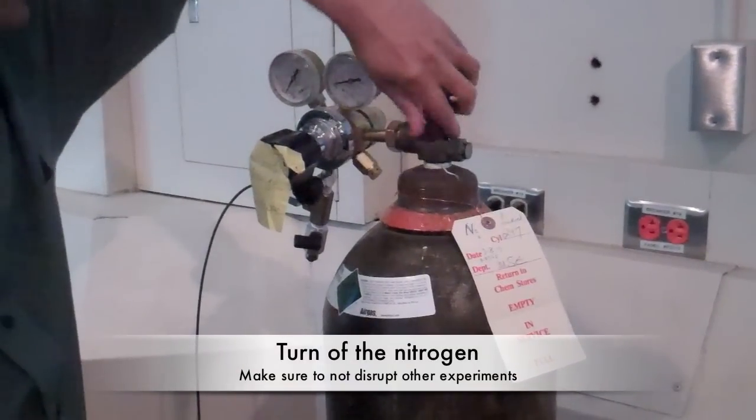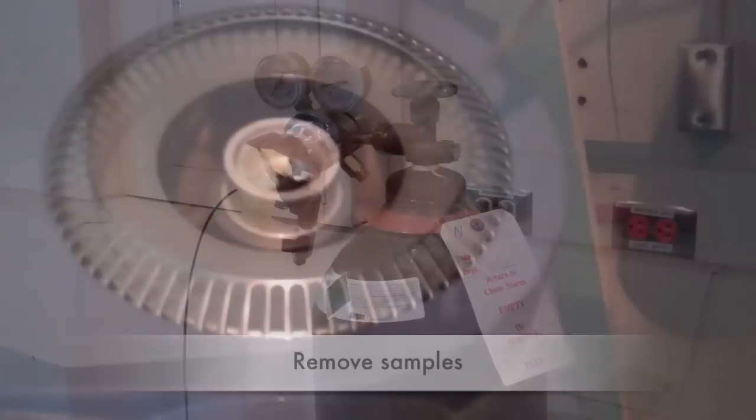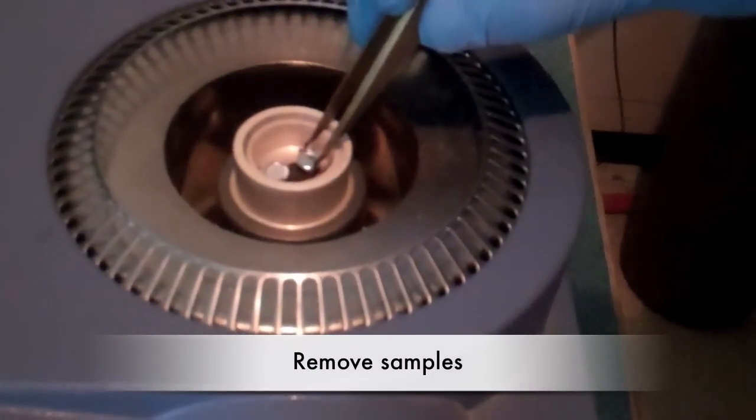When your testing is finished, turn off the nitrogen. If the TGA is being used, then just turn off the knob for your machine. Remove all samples from the DSC.